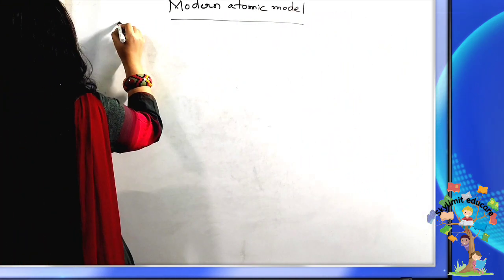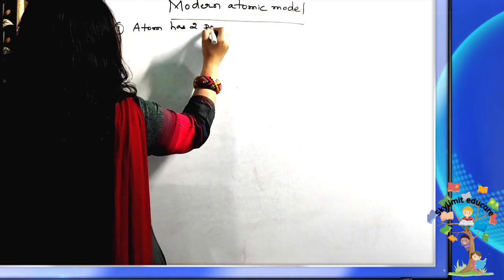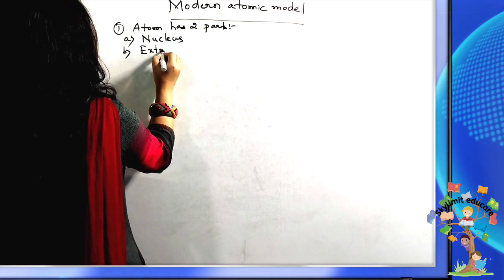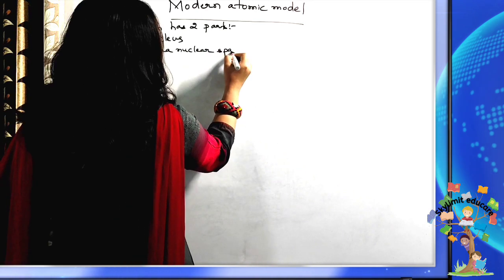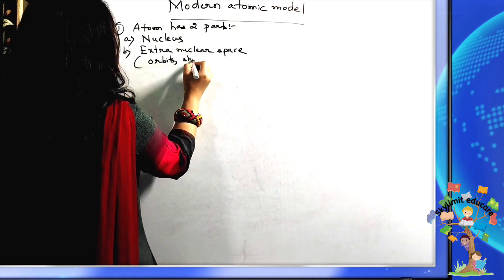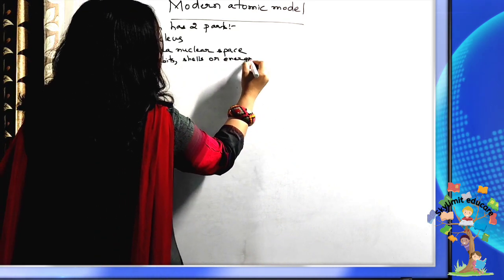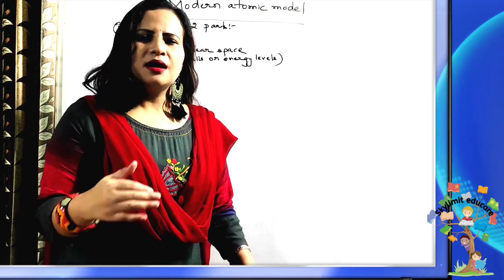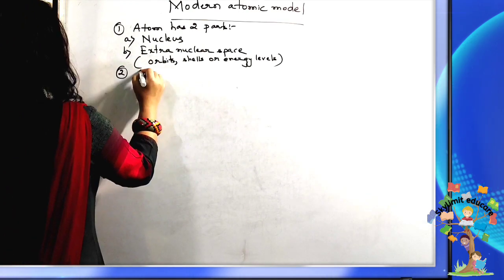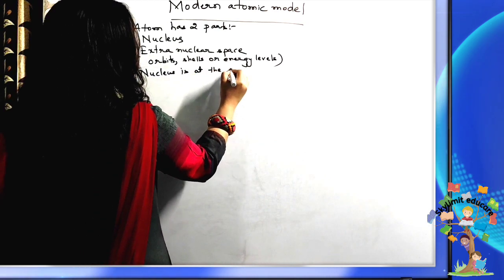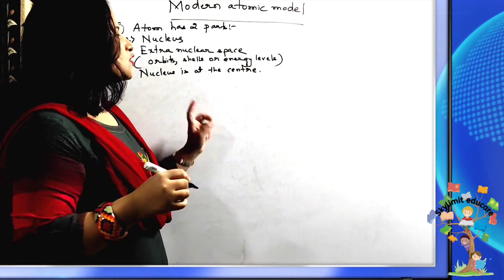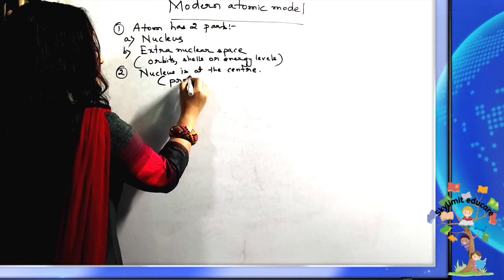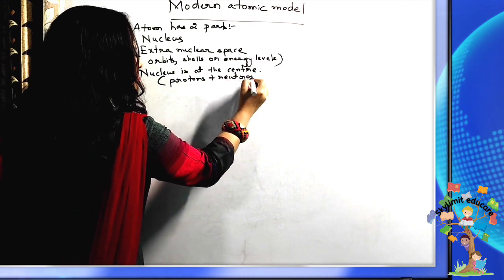An atom has two parts: the nucleus, and the extra-nuclear space where we have imaginary orbits, shells, or more appropriately energy levels. These are the imaginary orbits or imaginary lines where you imagine electrons revolving around the nucleus. The nucleus is at the center, and the entire mass of the atom is concentrated there.